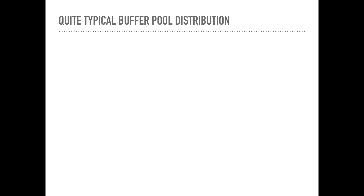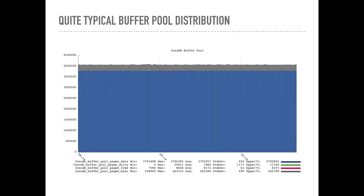Here's a very typical InnoDB buffer pool page distribution from a customer machine with InnoDB buffer pool size set to 62 gigabytes. As you can see, the buffer pool is mostly filled with regular InnoDB pages, but about 10% of it is used for other purposes. Each InnoDB page is typically 16 kilobytes in size, so you can multiply the page counts by 16384 to get usage in bytes.